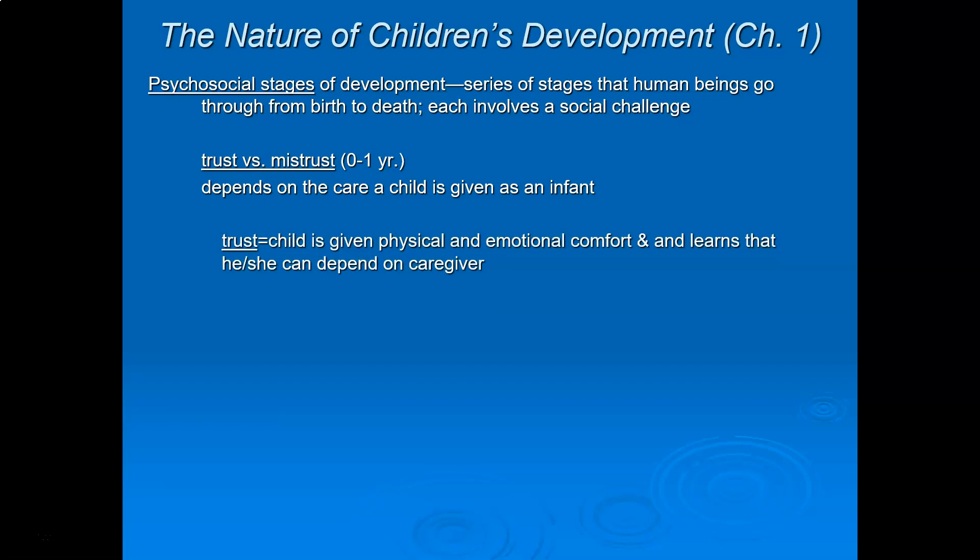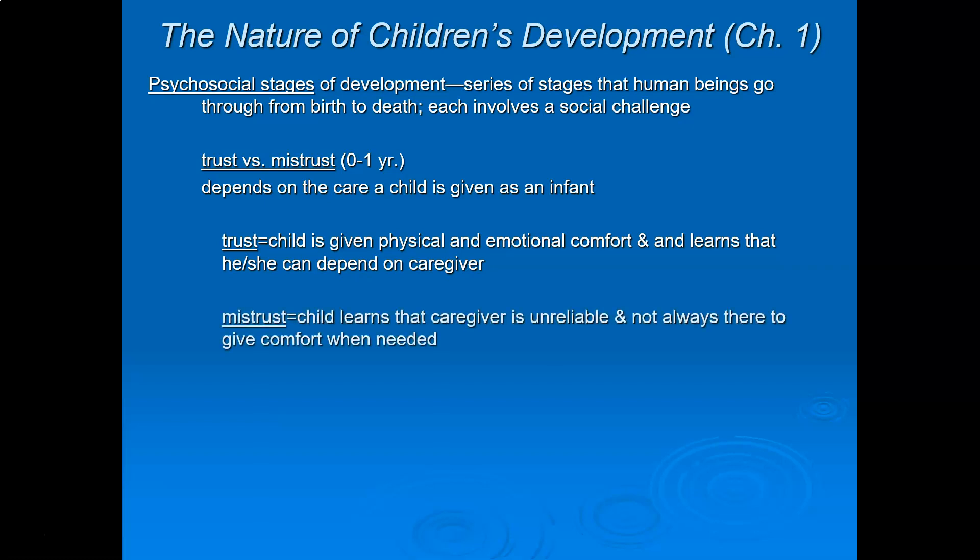To develop trust, which is obviously the more positive outcome, Erikson says the social interaction between parent and child is such that the child is given physical and emotional comfort when needed, and they learn they can depend on the caregiver. In other words, they learn: when I need something, I can trust that my caregiver will provide it. I'm hungry — I can trust my parent will feed me. When I need my diaper changed, that's taken care of too.